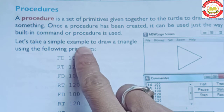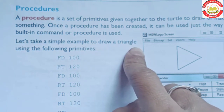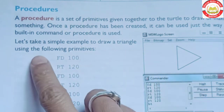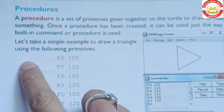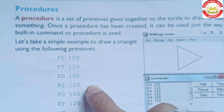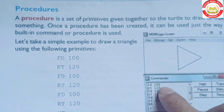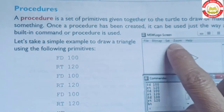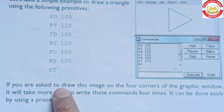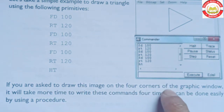Let's take a simple example to draw a triangle. Haan pe hum ek triangle create karna chahte hain. Using the following primitives: FD100, RT120, FD100, RT120, FD100, RT120, HT. This way, you can create a triangle. If you are asked to draw this image on the four corners of the graphics window, the same command set would need to be repeated multiple times.